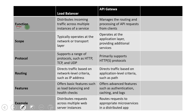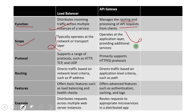Looking at point-wise differences: in terms of function, a load balancer distributes incoming traffic across multiple instances of a service, while an API gateway manages the routing and processing of API requests from clients as a single entry point. In terms of scope, a load balancer typically operates at the network or transport layer, whereas an API gateway operates at the application layer providing additional services.